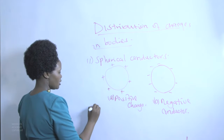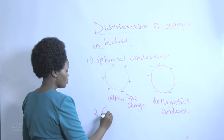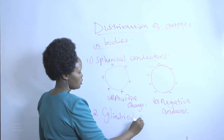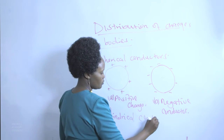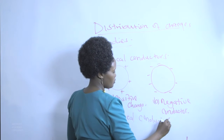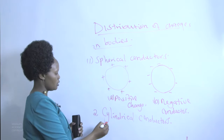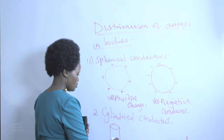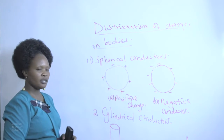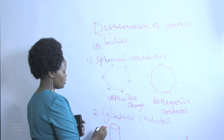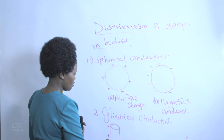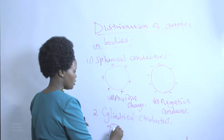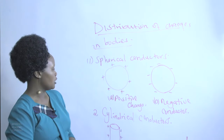Now let us look at cylindrical conductors. For cylindrical conductors, which have the shape of a cylinder, the charge is again distributed evenly on the surface of the cylinder.